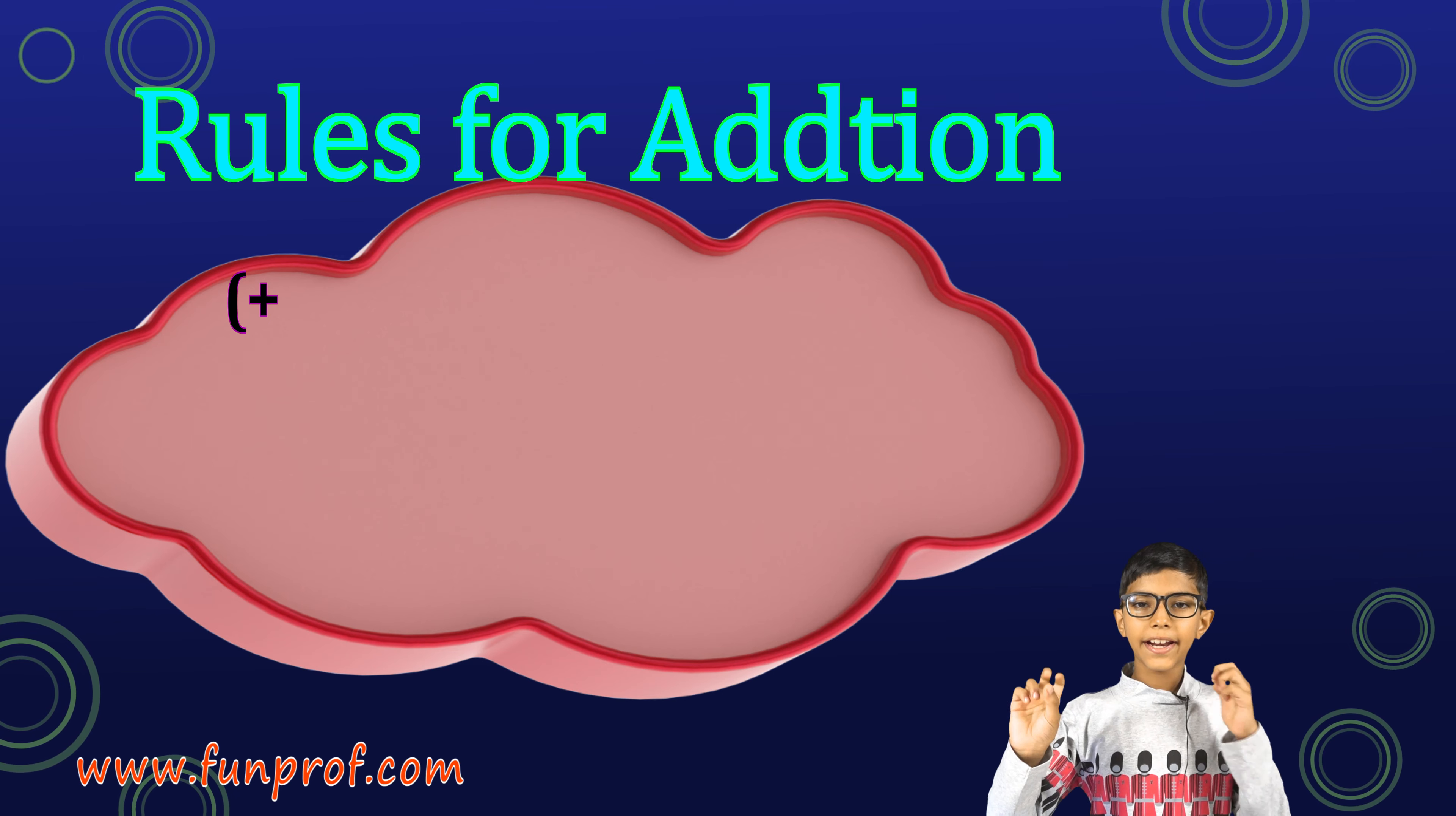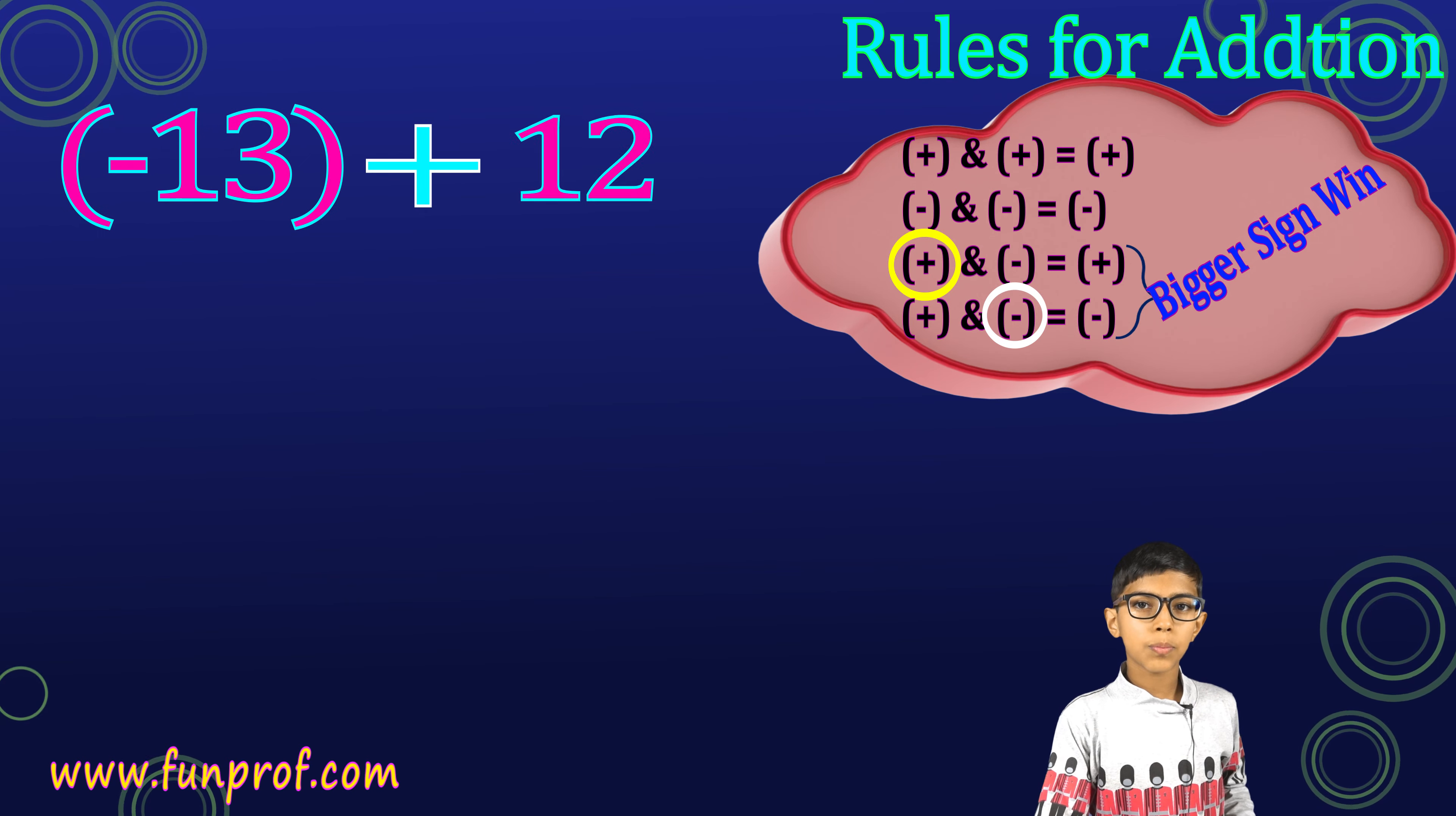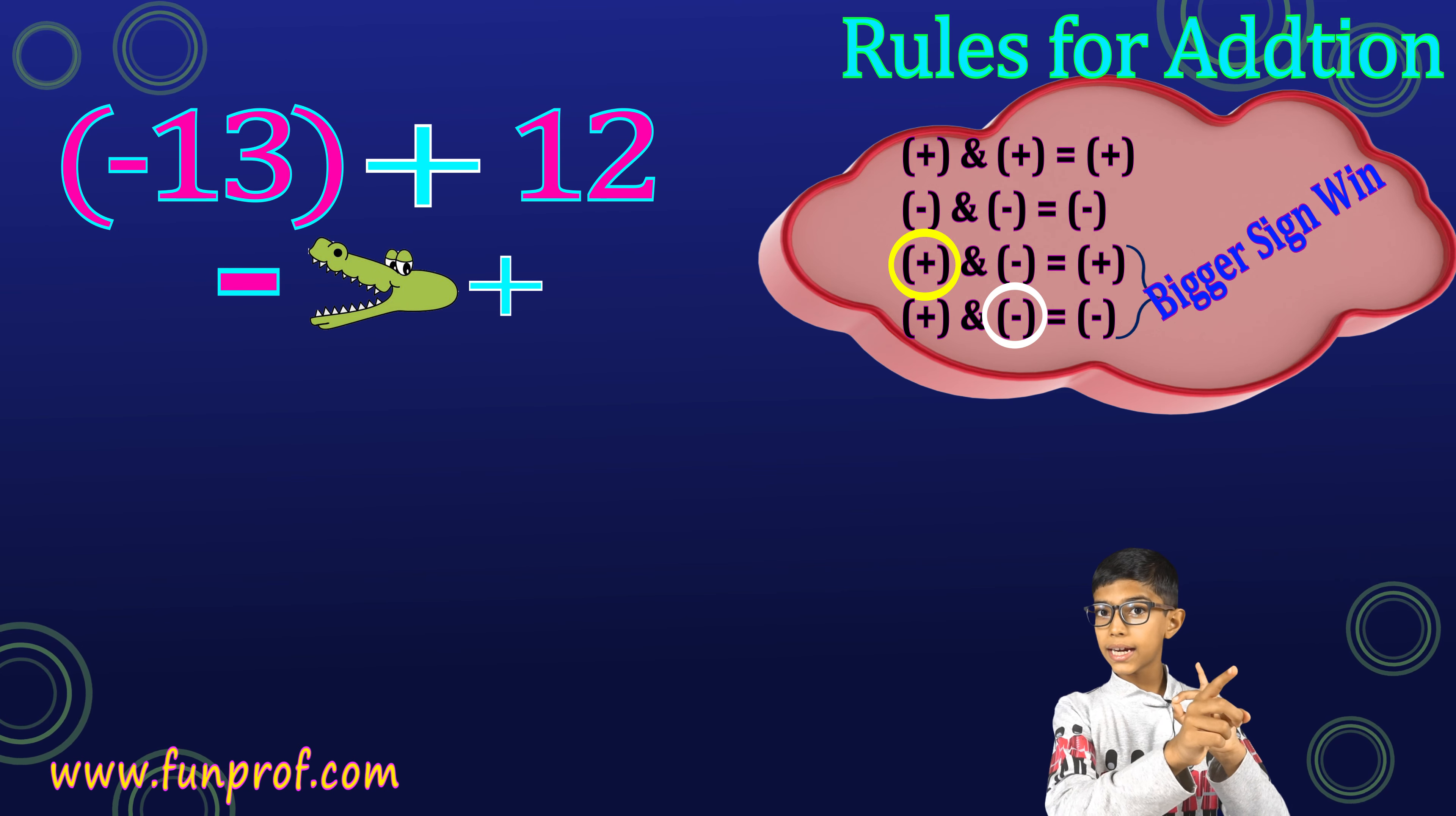Now, there are some rules for addition too. When we add two positive signs, we get positive. When we add two negative signs, we get negative. But when we add a positive sign and a negative sign, or a negative sign and a positive sign, the bigger sign wins.